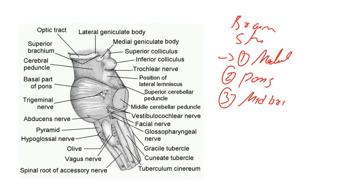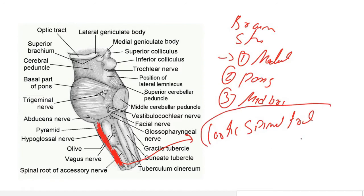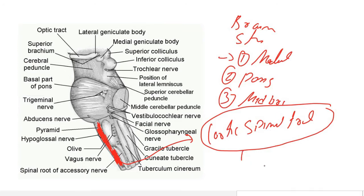The first external structure is the pyramid. The pyramid contains the tract coming from the cortex of the cerebrum — that is the corticospinal tract — which travels down to the spinal cord. This tract is also called the pyramidal tract.